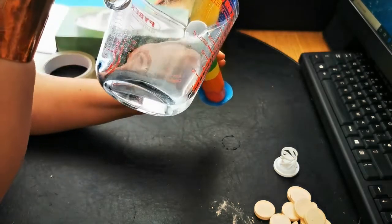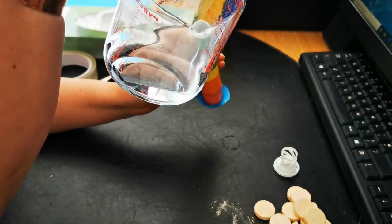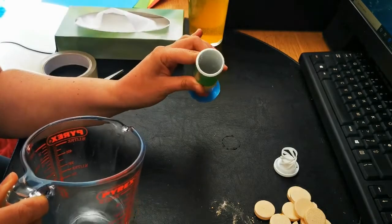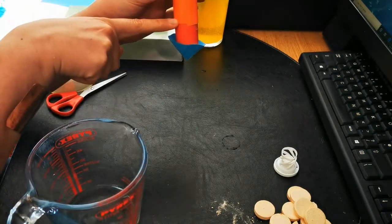When you pour the water in you need to have about an inch of water. So for my rocket it's about up to the red level.